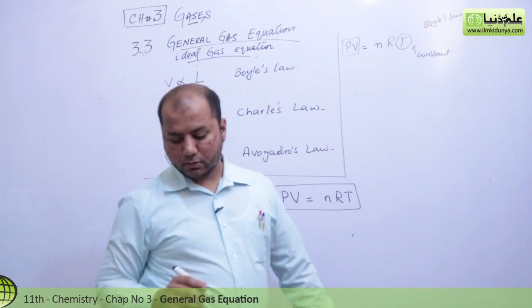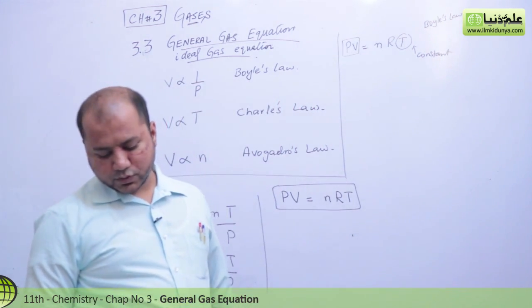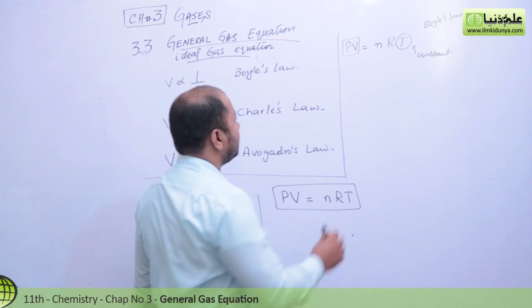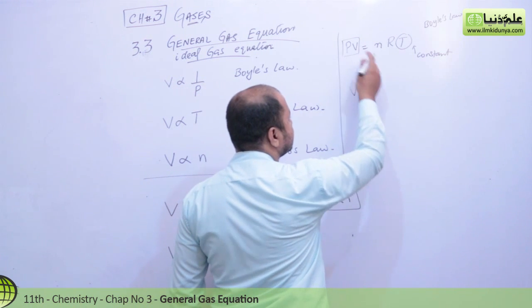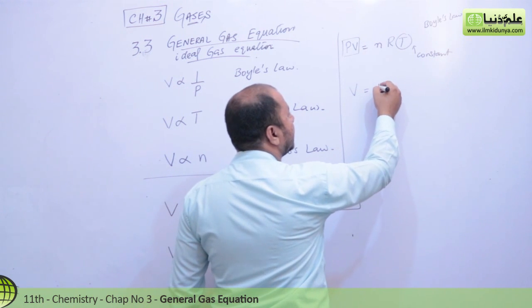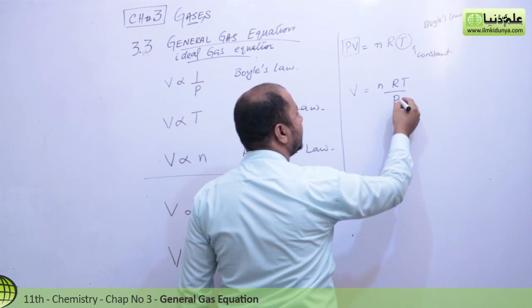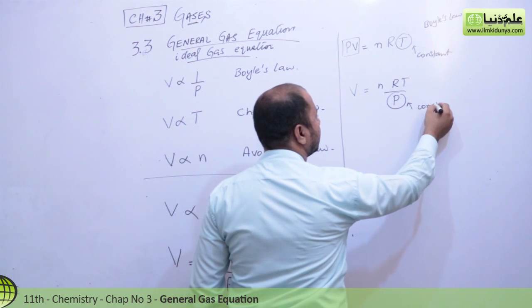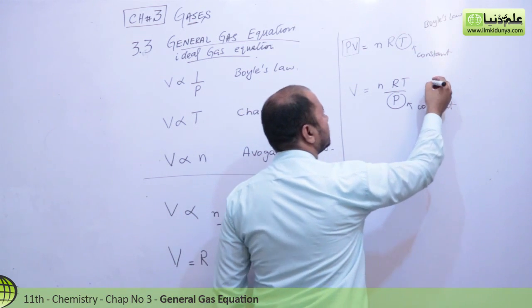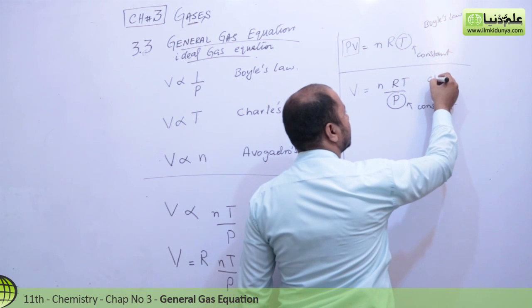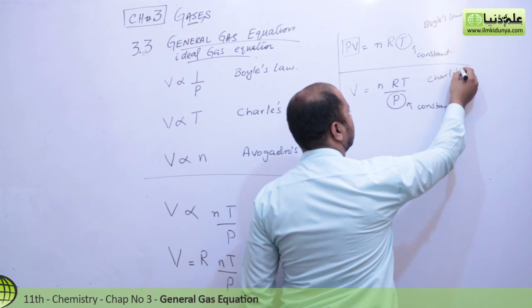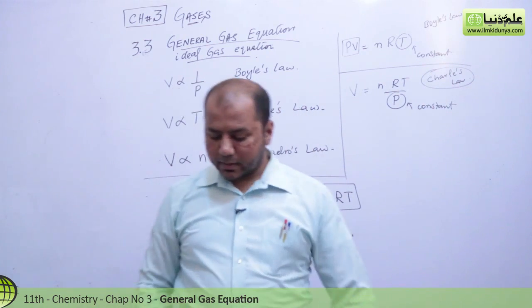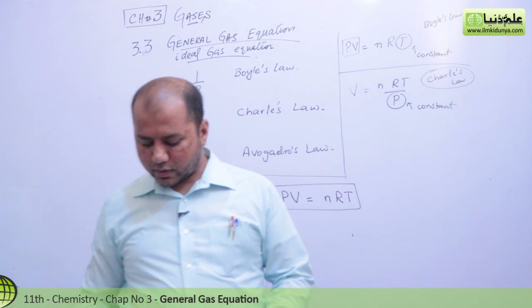If we look at the same equation in the form of Charles' law, in that you have taken pressure as a constant value. Let's write this as nRT over P. Now this thing is constant, and it becomes something like Charles' law.